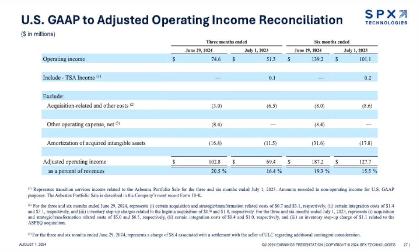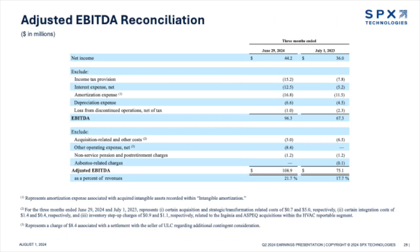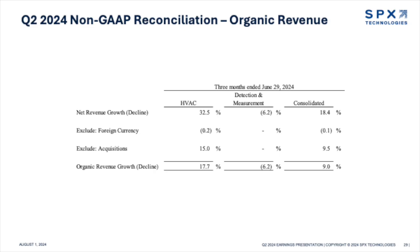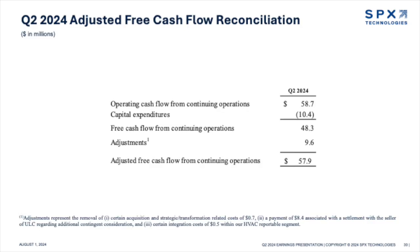We're very pleased with all three acquisitions. We had our biggest year last year, deploying north of $800 million of capital, and we're going to be materially below 1.5 times leverage by year-end, which is a testament to our model where we generate a lot of cash and invest it in growth. On the M&A front, our activity pipeline is healthy. We see some very interesting opportunities for growth on our detection and measurement side, as well as HVAC. It's a good, healthy market, and we believe in our strategy and will continue executing on it.